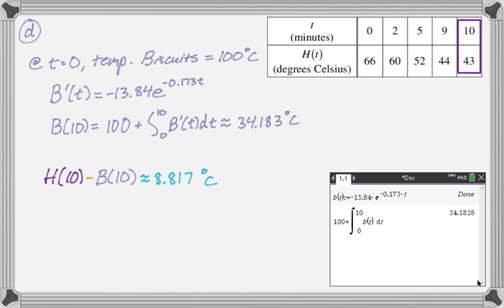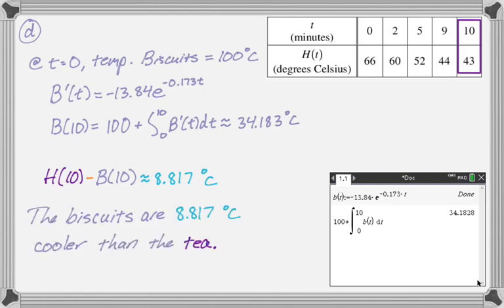And then I'm going to answer the question, right? So I think I answered it, but I always like to write a sentence. So I'm going to say the biscuits are 8.817 degrees Celsius cooler than the tea. And that's the entire question. So pretty straightforward. I hope you found this helpful and good luck.